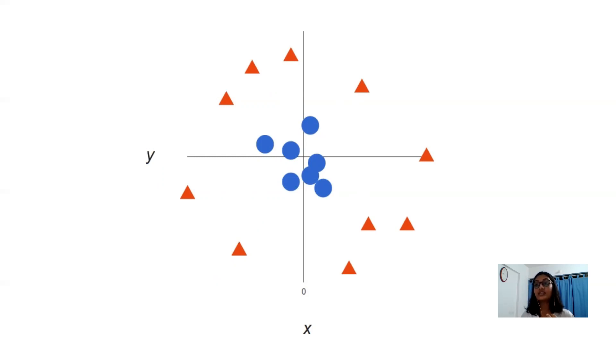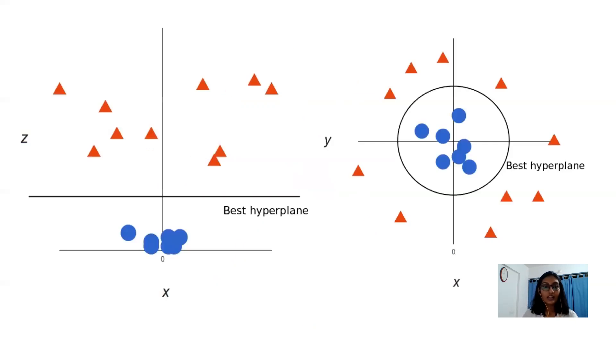Now this will give us a three dimensional space and taking a slice of that space, it will look like this. Now this is the slice that we are getting. And if we look at it from another angle, we'll see that there is a circle which is distinguishing the blue points from the red side points. So this is the nonlinear case of SVM.